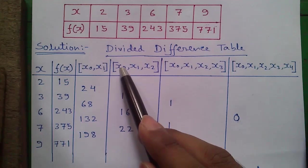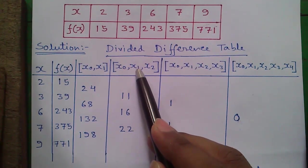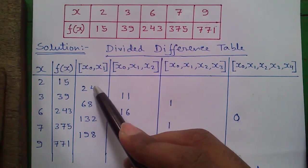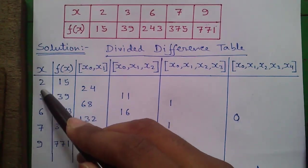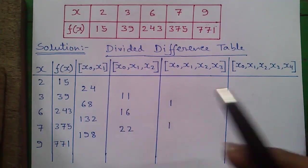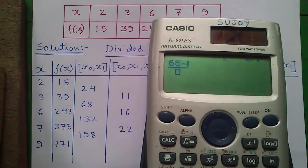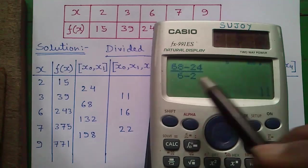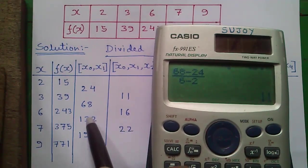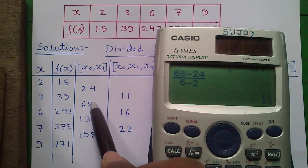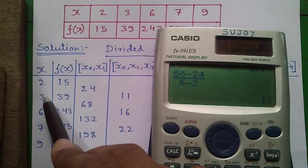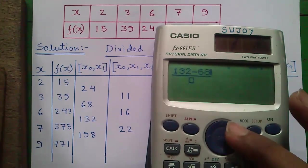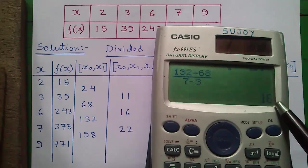Next we will move to the next column, that is the x0, x1, x2 column. This number can be obtained by 68 minus 24 divided by 6 minus 2 — with a gap of one number — which equals 11. Similarly, the next number can be obtained by 1932 minus 68 divided by 7 minus 3, with a gap of one number, which equals 16.